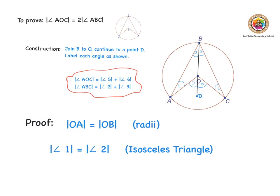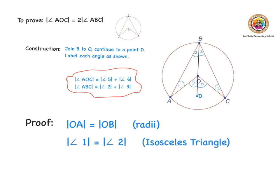So the first statement I can write down is angle one equals angle two, because of the radii giving us an isosceles triangle. Now I can see that angle five is an exterior angle to triangle OAB, and the exterior angle equals the sum of the two opposite interior angles — so angle five equals angle one plus angle two.